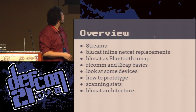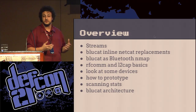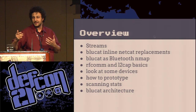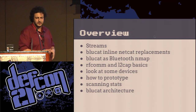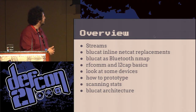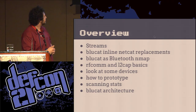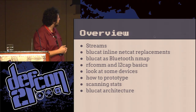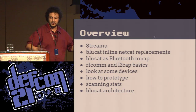The overview: we're going to talk about streams and how they're awesome and fundamental. Then how you can replace Netcat inline with BlueCat — any situation you'd use Netcat over an IP address, you can use BlueCat and replace the IP addresses with MACs, you just have to be in range. We also have BlueCat as a Bluetooth Nmap — scanning and service discovery. We'll cover RFcomm and L2CAP, look at some devices, prototype some stuff, and if we have time, the architecture of how BlueCat works across tons of architectures.